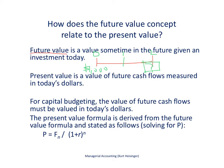The present value is a value of future cash flows measured in today's dollars. For capital budgeting, we have to know how to find the present value of a future cash flow — what is it worth in today's dollars? There is a formula here that will help us figure that out, and I'm going to go to the next page, attach some numbers to this, and talk more about how this works.